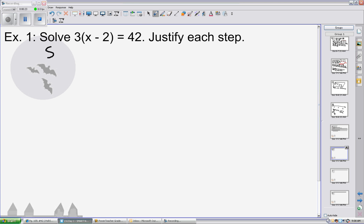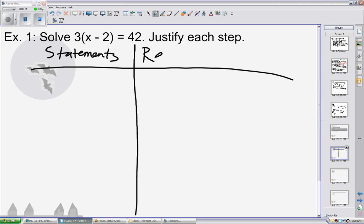Again, every two-column proof will always be broken up as statements and reasons. Just as in paragraph proofs, the first thing that is always written is always the given.